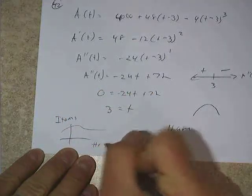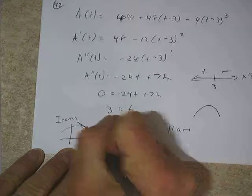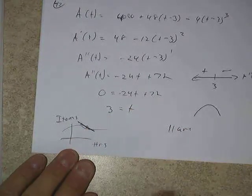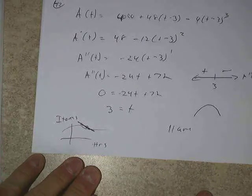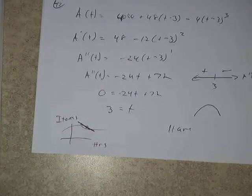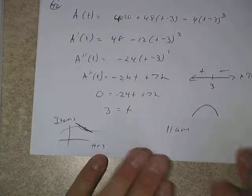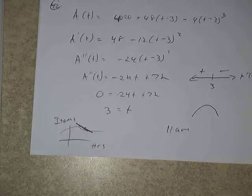The derivative of the amount is a rate function because if you draw a picture of A(t) — where the y-value is in items and the x-value is in hours — finding the slope at any given point means taking items divided by hours, which gives items per hour. That's a rate.